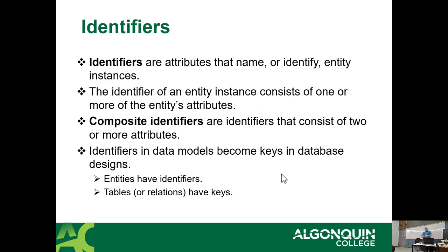There are cases where an identifier is what's called a composite identifier — meaning we cannot uniquely identify a piece of information by only a single column. Student number is great because it's a single column attribute. But there are cases where you need more than one attribute to identify something, and those are known as composite — a composite primary key or composite identifier, made up of more than one thing.